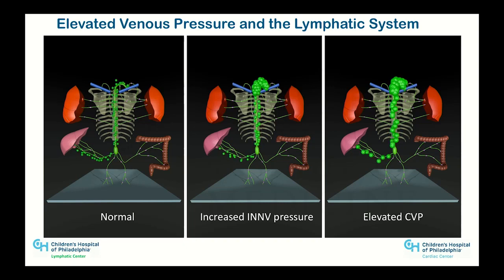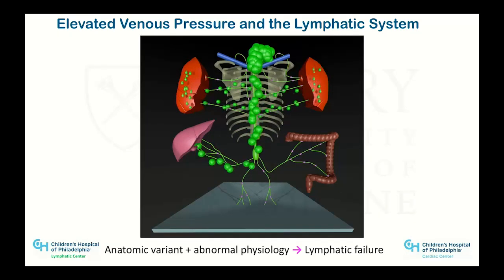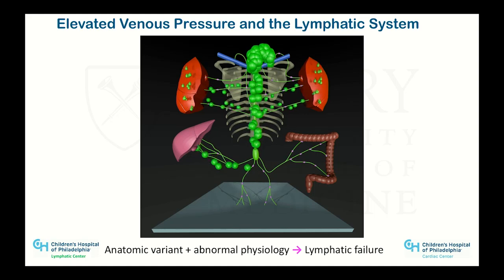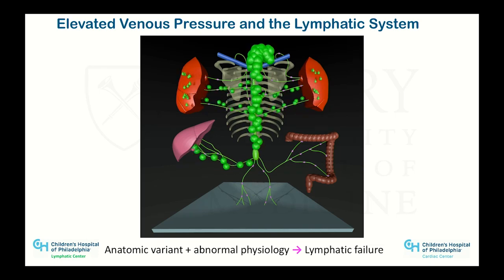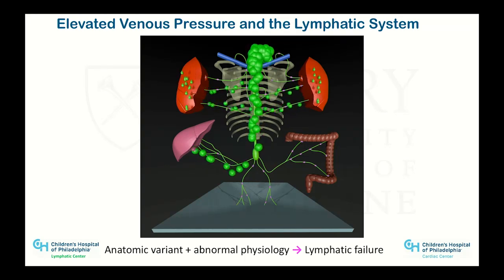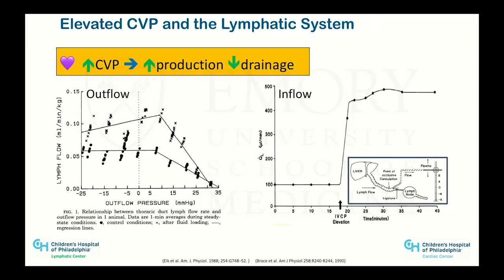In adults, we also start to see abnormal anatomy leading to pulmonary edema and other problems — abnormal flow in the lungs where the lymph channels develop retrograde flow. Instead of draining toward the ducts, flow starts going in the opposite direction. We call this pulmonary lymphatic perfusion, and it can lead to all kinds of findings. Animal work shows that at a pressure of about 10 mmHg, you start to see a linear decline in lymph drainage.